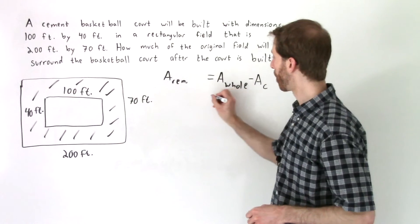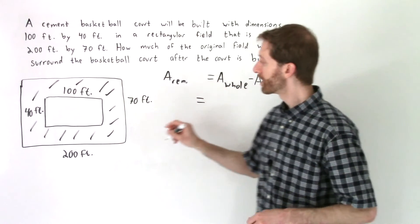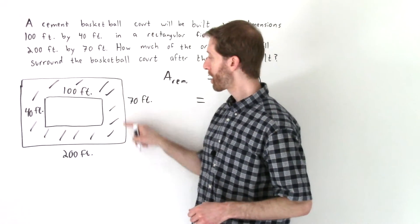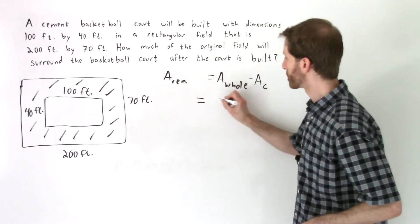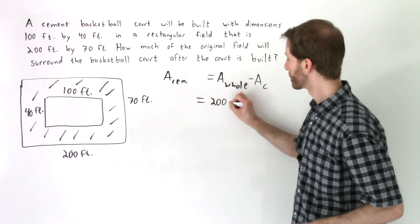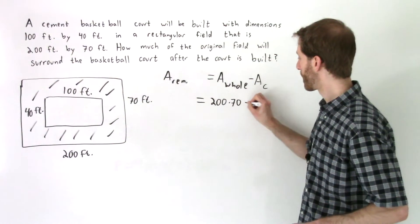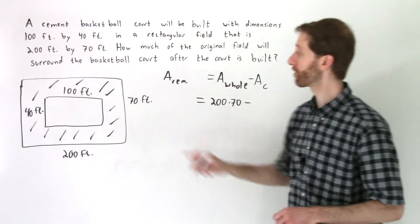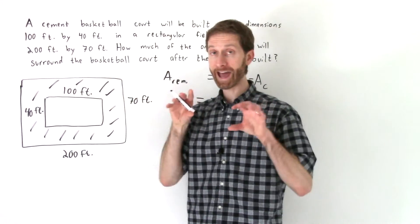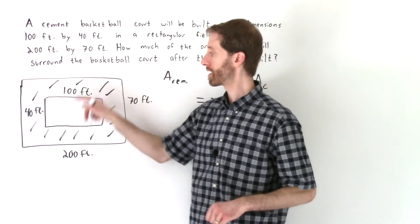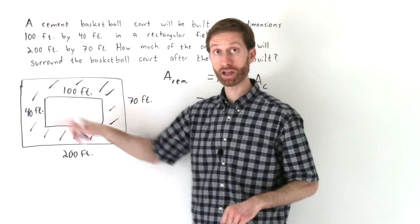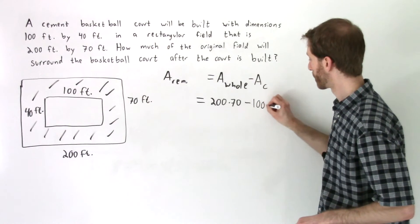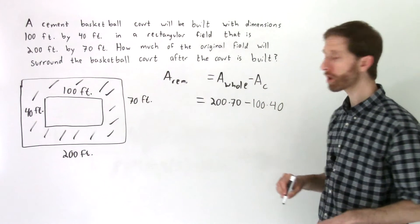The area of the whole, if we think about that, that's going to be 200 by 70, length times width. So that is 200 times 70. And then from that, we will subtract the area of the part that we are taking out, and that'll leave us with the area that remains. That'll be 100 times 40.